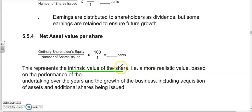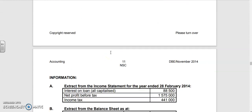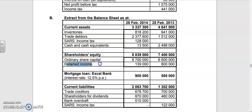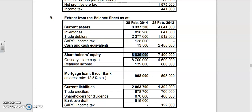The formula is ordinary shareholders equity over number of shares issued times one hundred. Your ordinary shareholders equity is made up of ordinary share capital and retained income. These two are given to us: eight eight three nine triple zero.